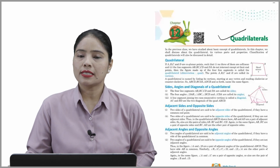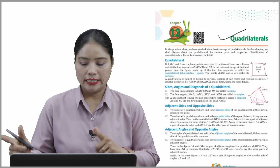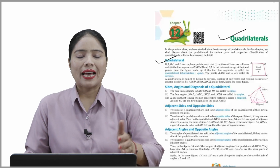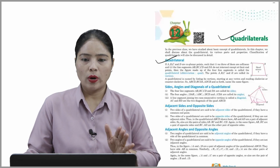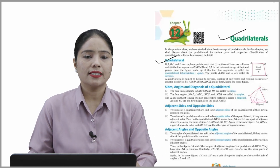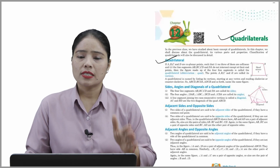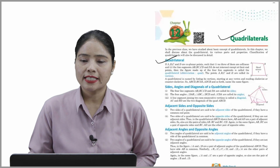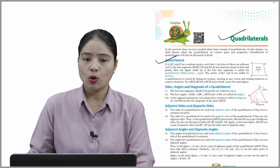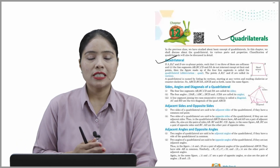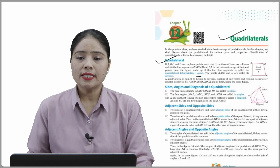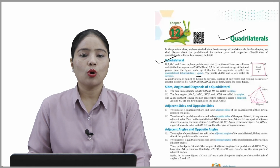Classifications of quadrilaterals will also be discussed in detail. So let's start. If A, B, C, and D are co-planar points such that no three of them are collinear, and the line segments AB, BC, CD, and DA do not intersect except at their endpoints, then the figure made up of the four line segments is called a quadrilateral. Abbreviated as 'quad', written as Q-U-A-D. The points A, B, C, and D are called its vertices.